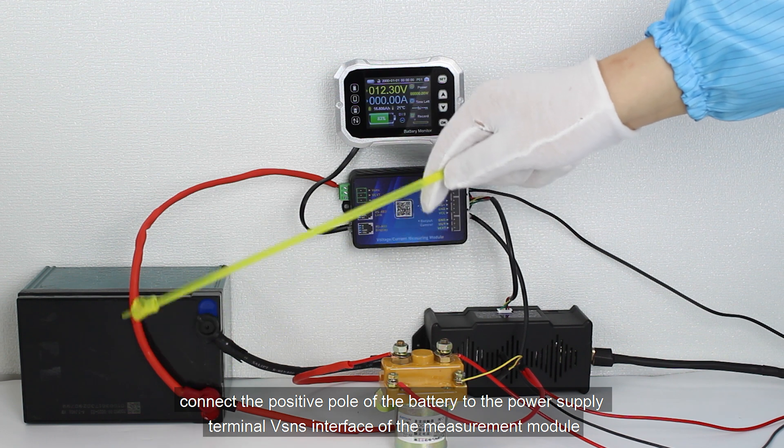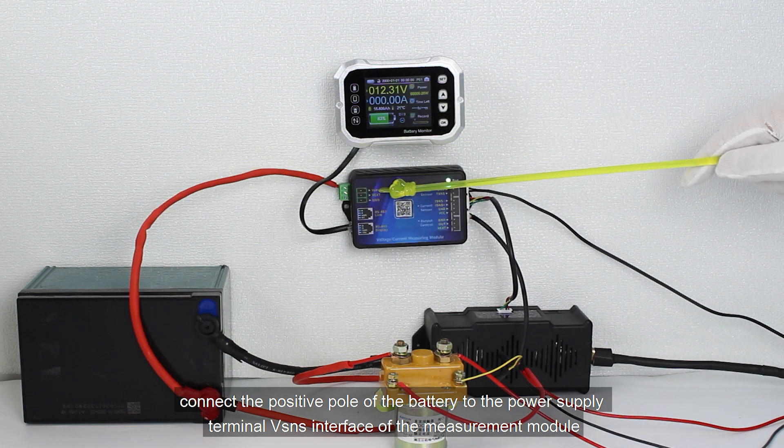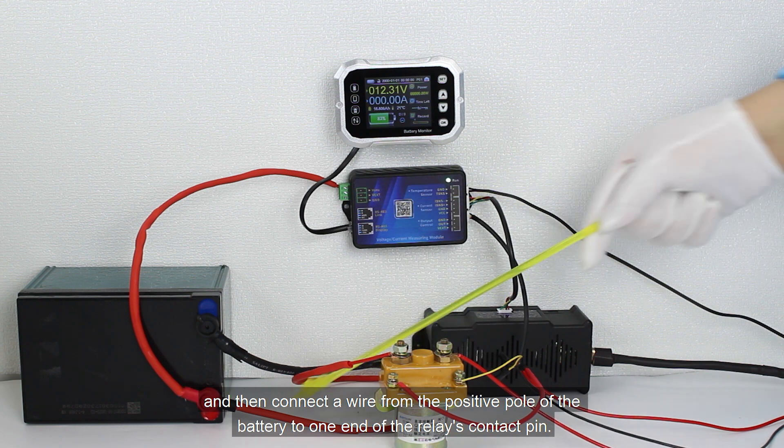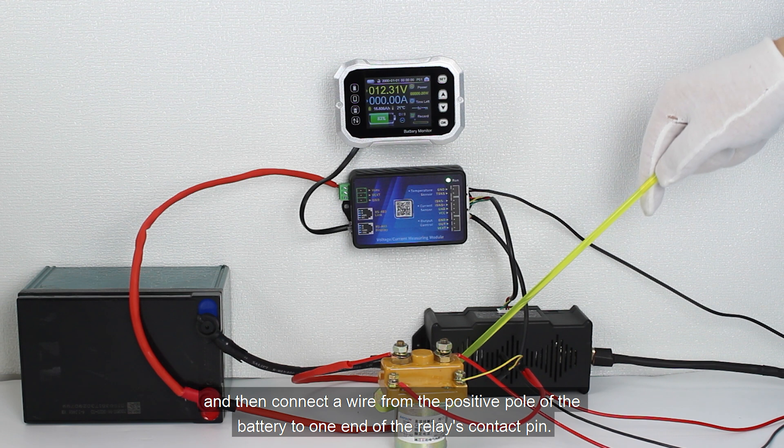Next, connect the positive pole of the battery to the power supply terminal VSNS interface of the measurement module. And then connect a wire from the positive pole of the battery to one end of the relay's contact pin.